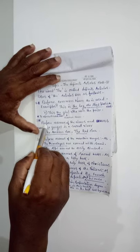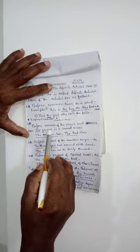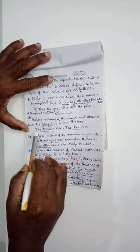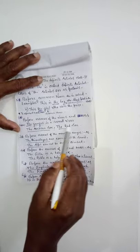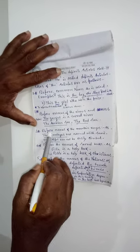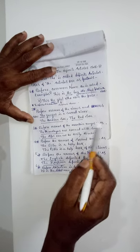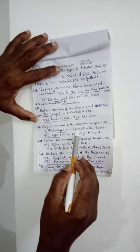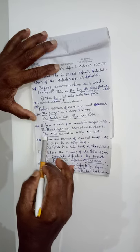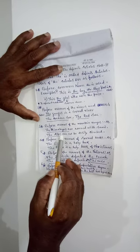Before the names of mountain ranges, as mentioned earlier, 'the' is used. For example: 'The Himalayas are covered with snow.' 'The Alps cannot be easily climbed.' So we use 'the' before the Himalayas, the Alps, and similar mountain ranges.